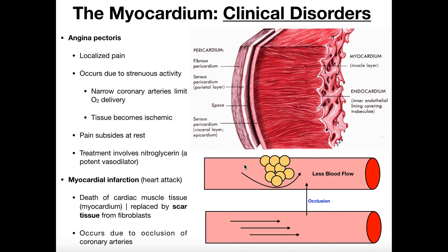If that ischemia — that limited oxygen delivery — is more transient and very minimal, and you just get chest pain, that's what we call angina pectoris. Angina pectoris is really just a fancy term that means chest pain. It's a localized pain and it usually occurs due to strenuous activity. A classic example: a middle-aged man working outside in the yard starts to feel chest pain.